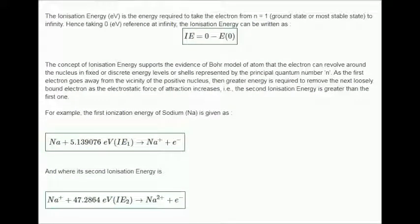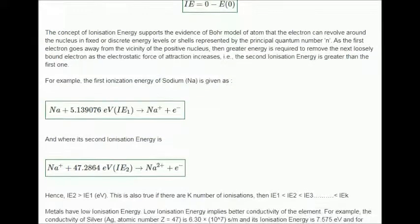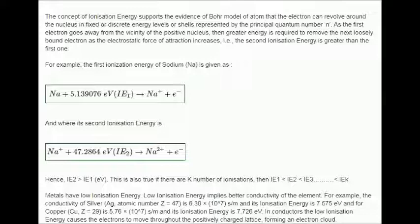For example, the first ionization energy of sodium (Na) ion and its second ionization energy can be represented as follows. Hence, IE2 greater than IE1 in eV. This is also true if there are k number of ionizations, then IE1 less than IE2 less than IE3, et cetera.